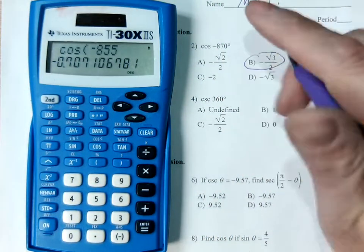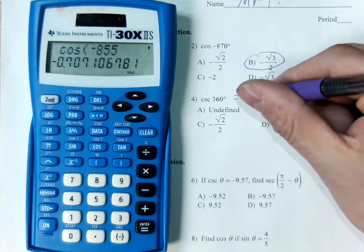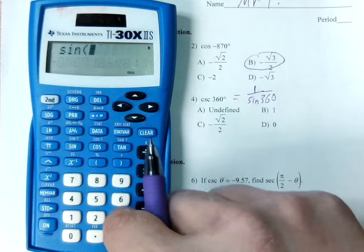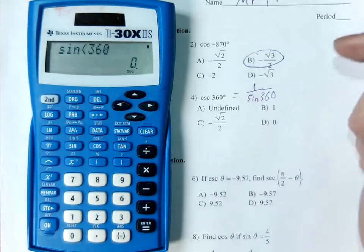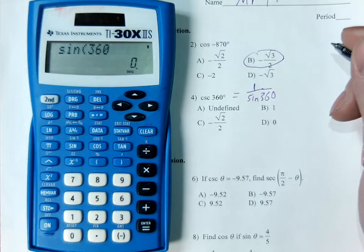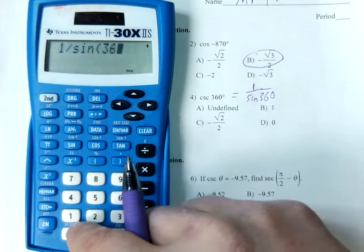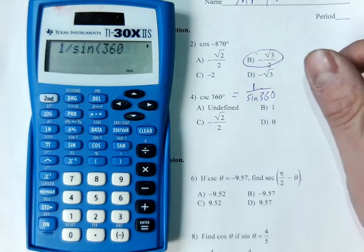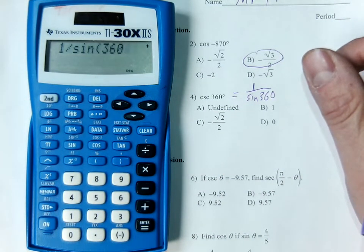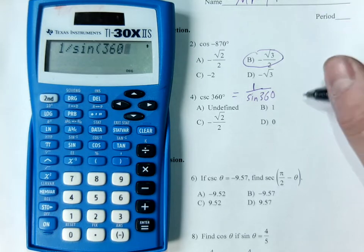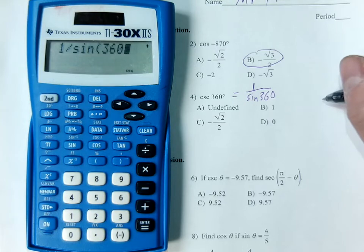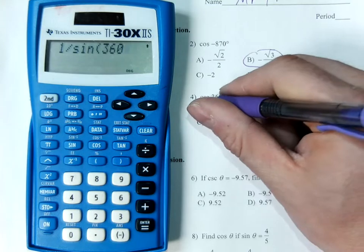The cosecant is 1 over sine. Now, the thing about the sine of 360 is that it exists and it's 0. So 1 divided by the sine of 360 is going to be undefined. This is one of the asymptotes on the cosecant function. When we graphed it, we had an asymptote any time it crosses the x-axis or the midline — there's one at 0 and one at 2π, which is 360. So this is an undefined value.